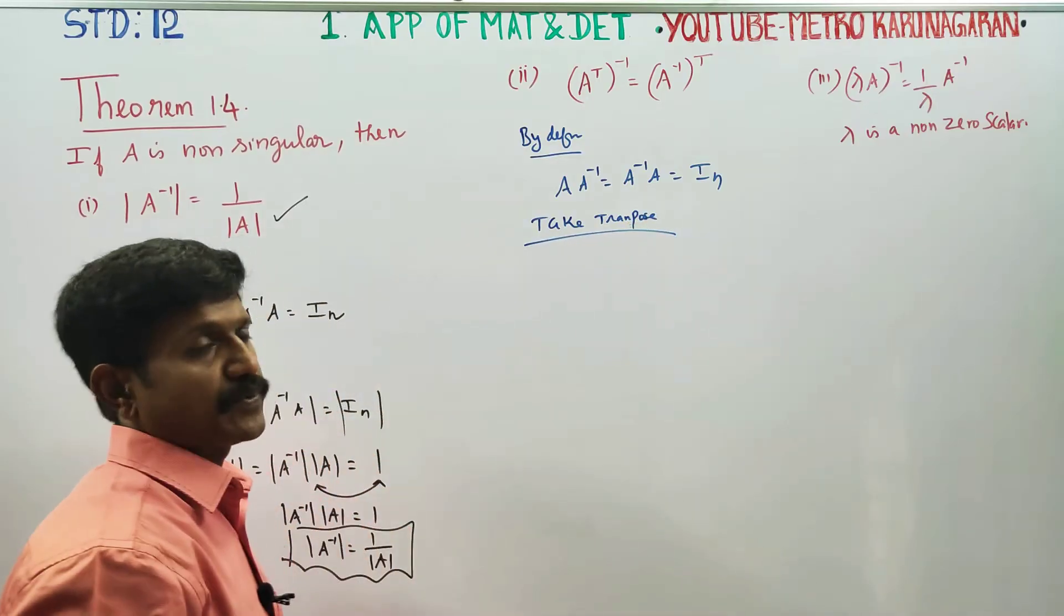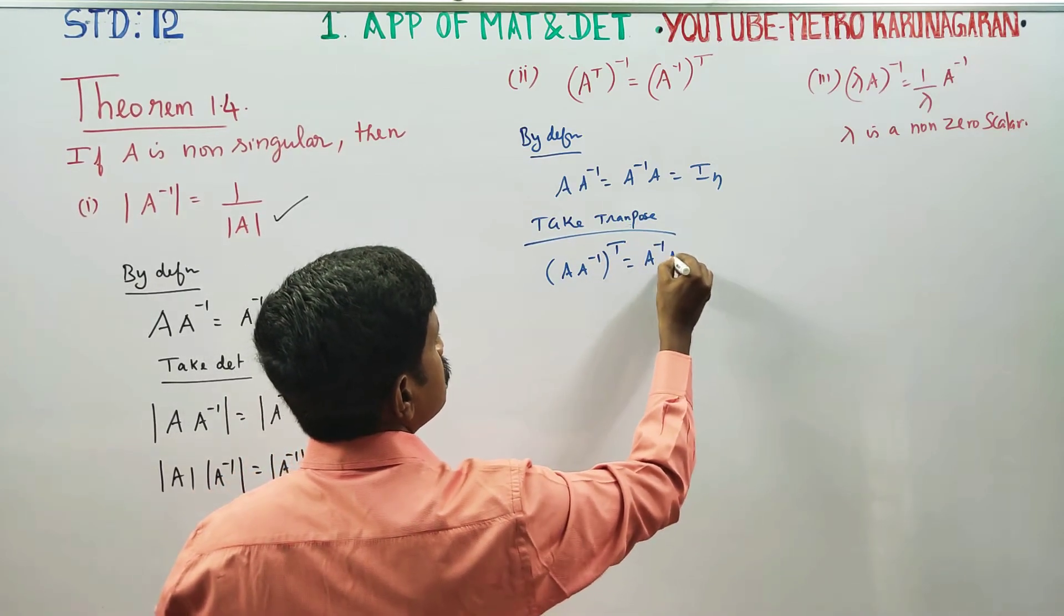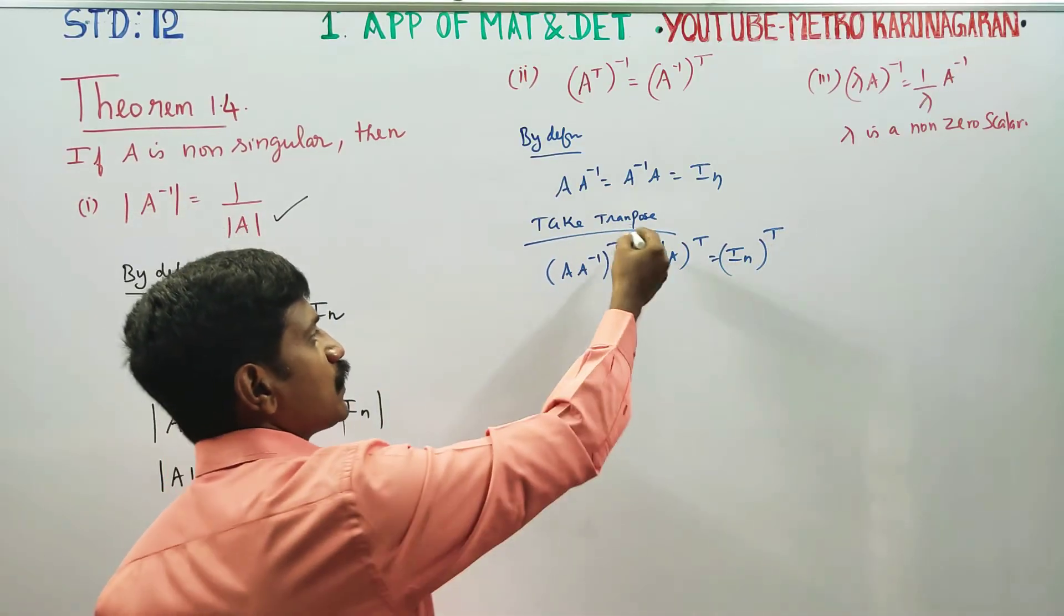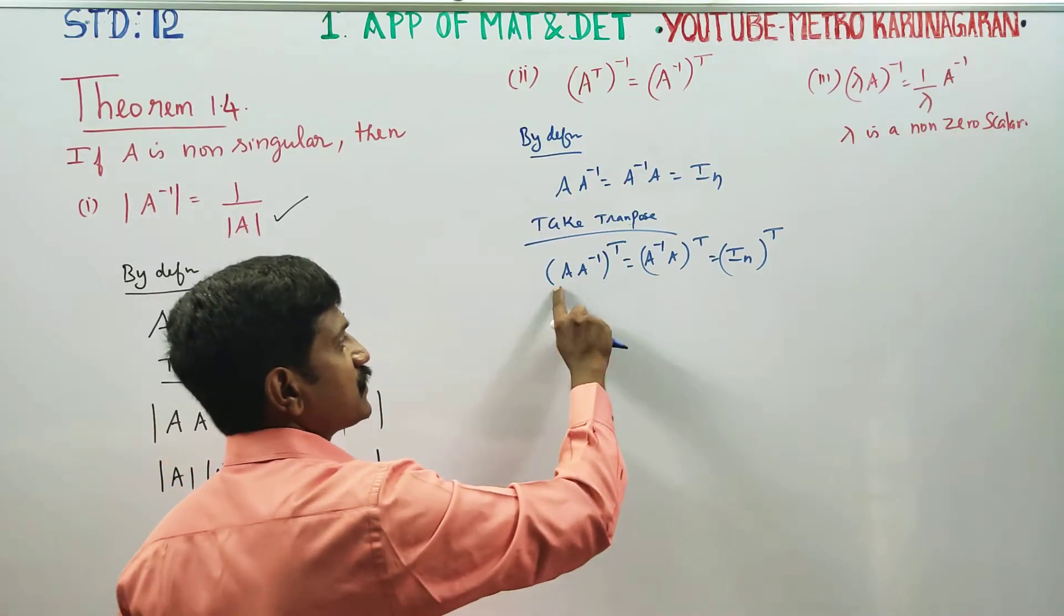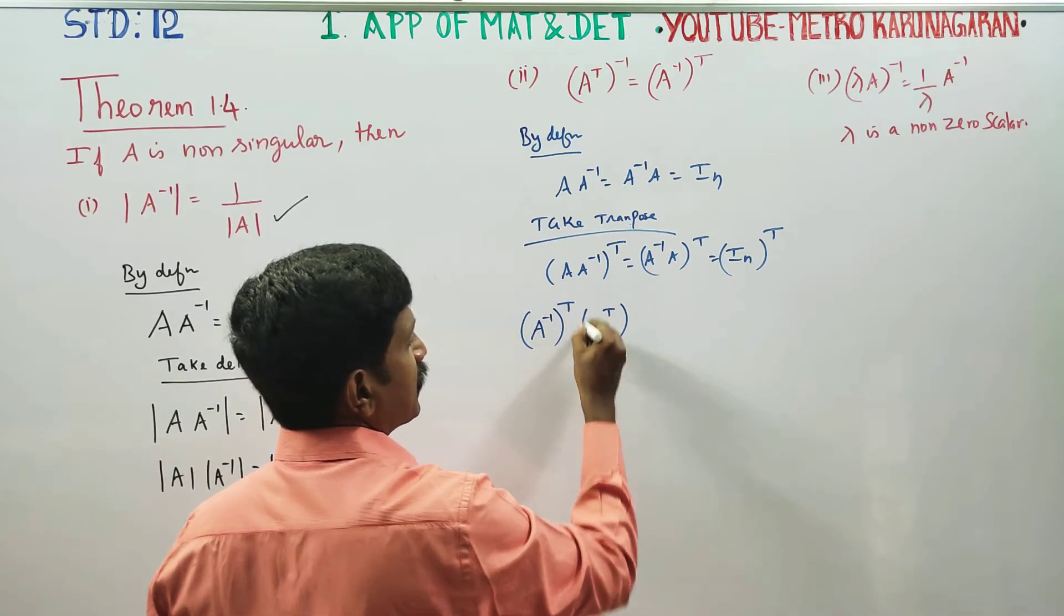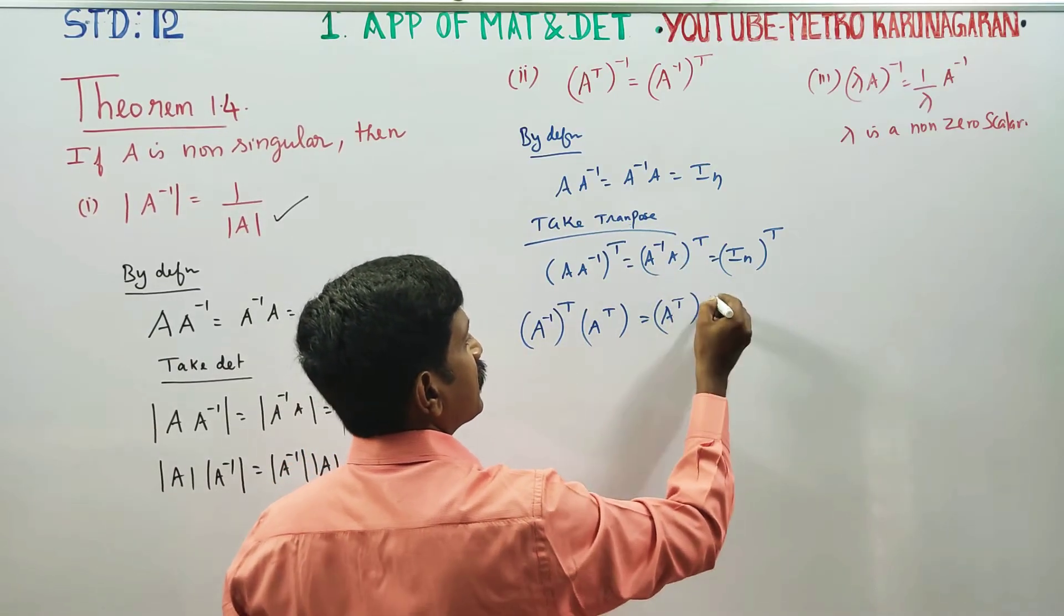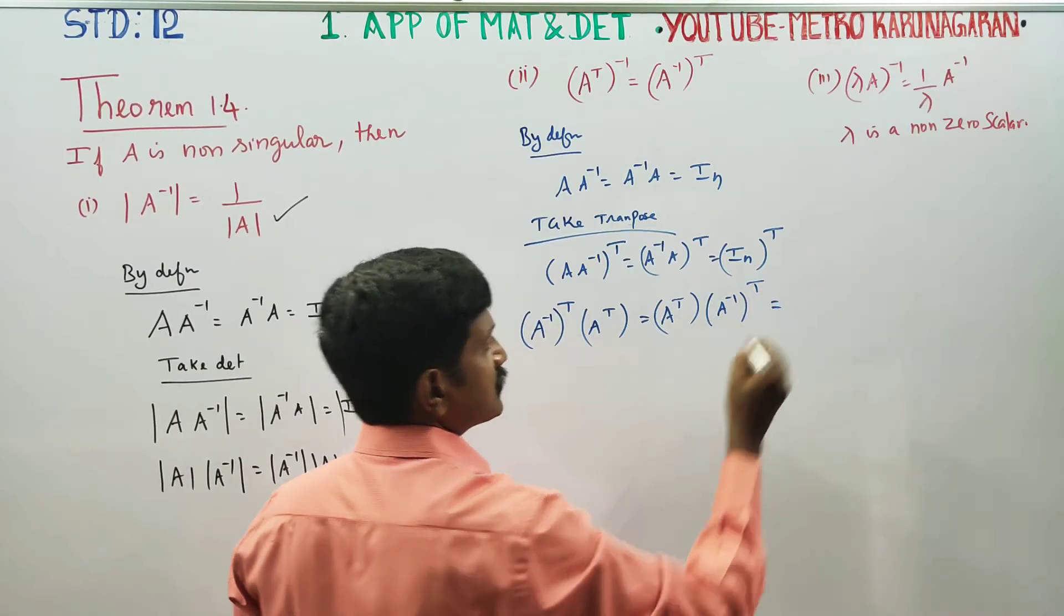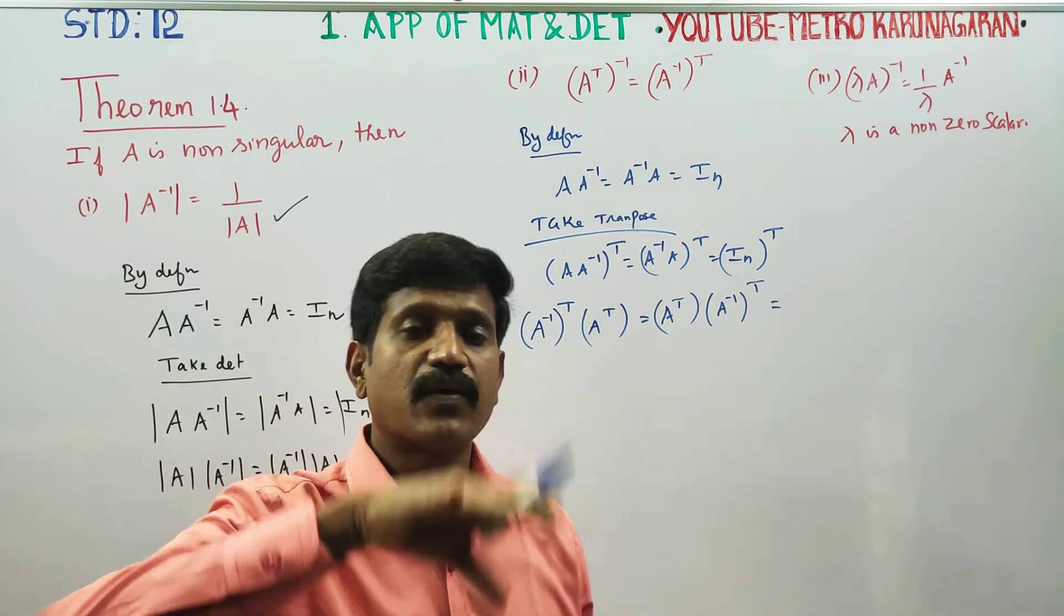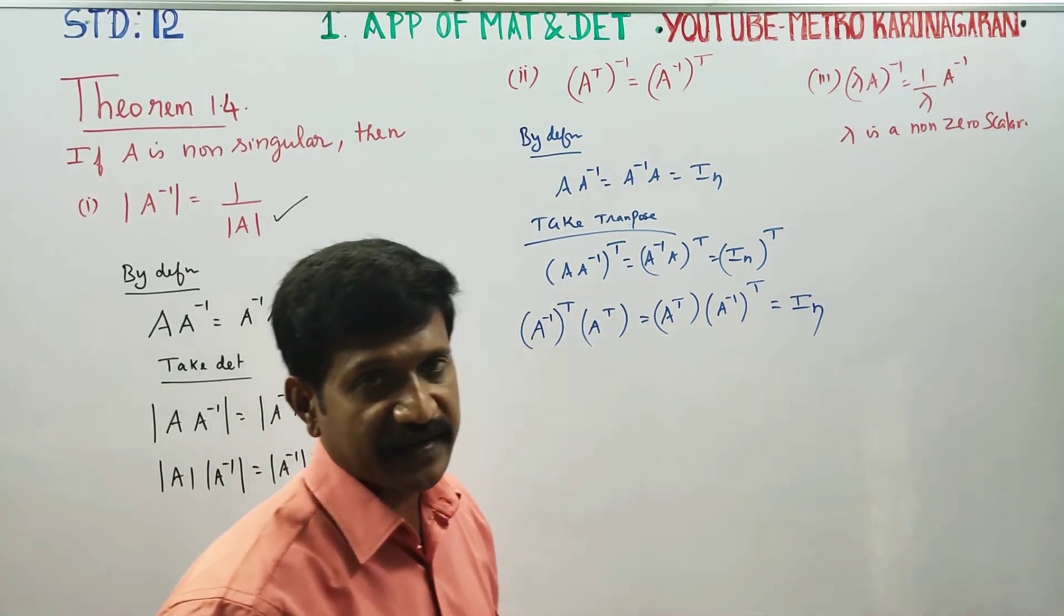Taking transpose: A times A inverse whole transpose equals A inverse times A whole transpose equals I_n transpose. Using the reversal law for transpose, A inverse transpose times A transpose equals A transpose times A inverse transpose equals I_n.